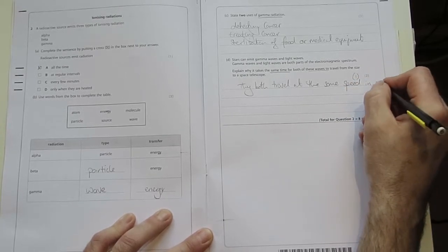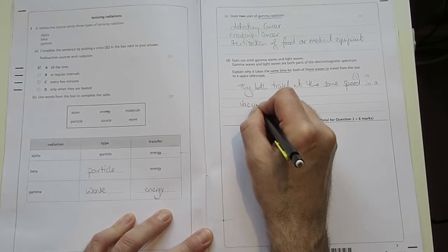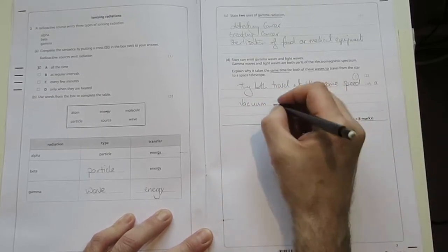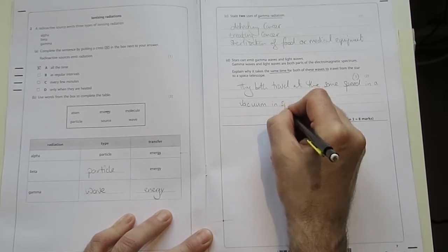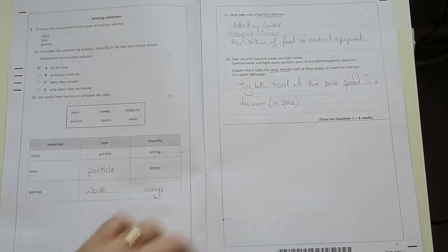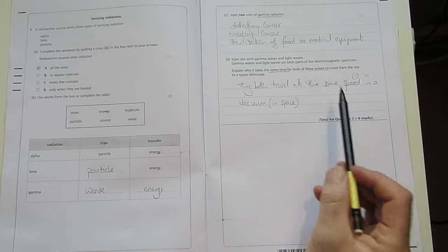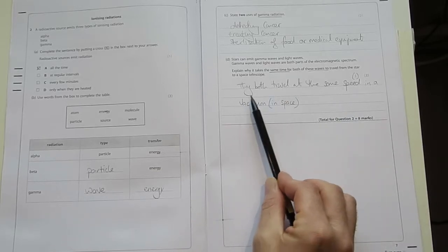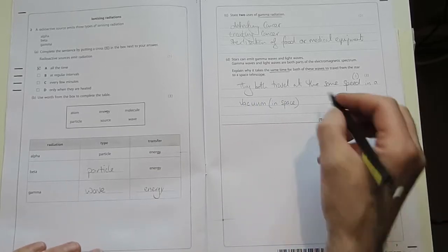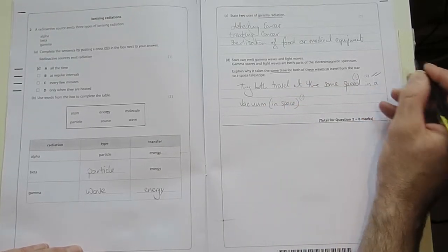And crucially in a vacuum. Or alternatively we could say in space. Space is a vacuum. A vacuum is a space where there's no other matter to interfere with the travelling of the waves. And so that is the fastest possible speed. So one mark for that. And that gives us the full two marks.